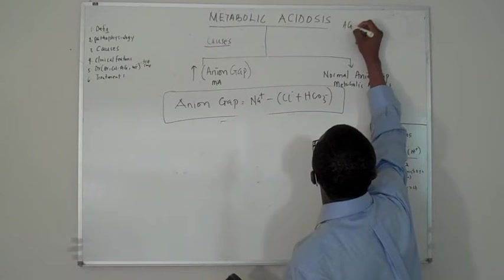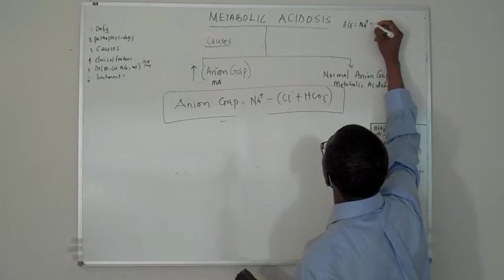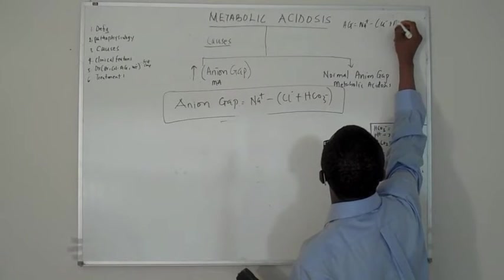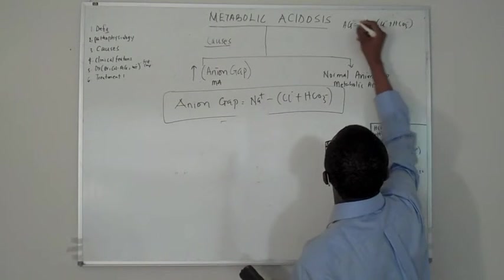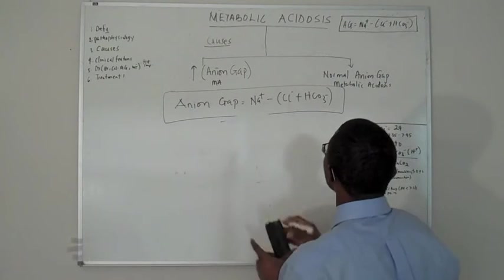An anion gap, we just call it AG, right? It's sodium minus chloride plus bicarb. We're going to put that right there. So, remind me if I forget.